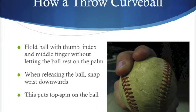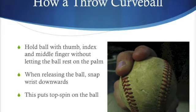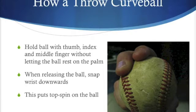So you're probably asking yourself, how do you throw a curveball? You're going to want to hold the baseball with your first three fingers, and then when you release the ball, you want to flick your wrist downwards. This will put the needed topspin on the baseball so that it will suddenly drop when it reaches home plate.